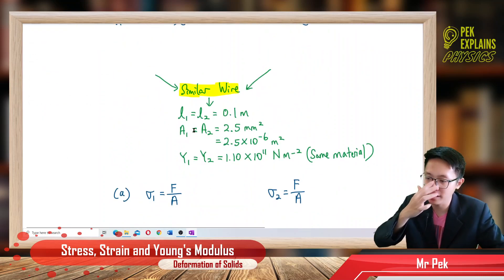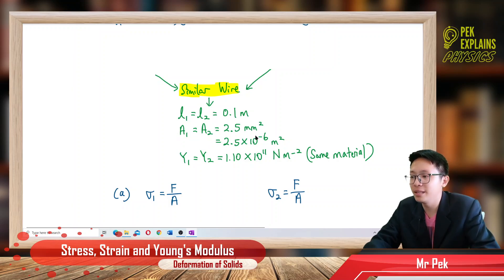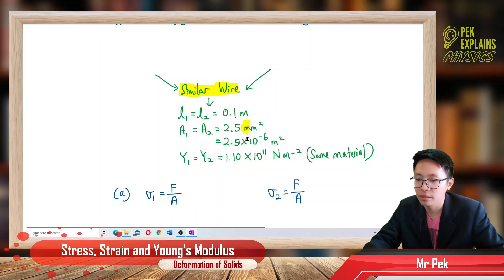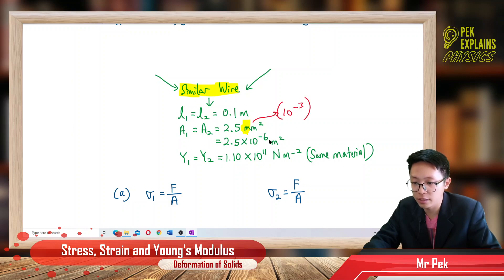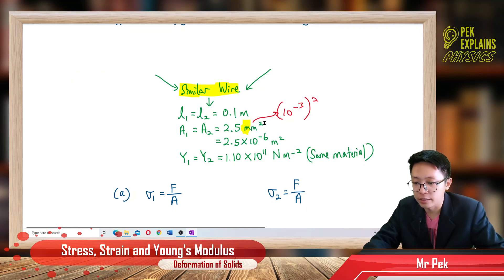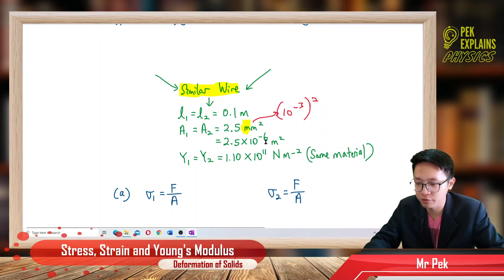So I can simplify: L1 equals L2 equals 0.1 meter. Area 1 equals Area 2. The given value is in millimeters — remember to change to SI units. Because 'milli' is 10⁻³, but it is under the power of 2, so negative 3 times 2 becomes negative 6. Don't put negative 3 — you must multiply negative 3 by 2 to get negative 6.